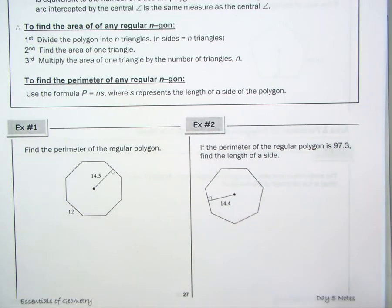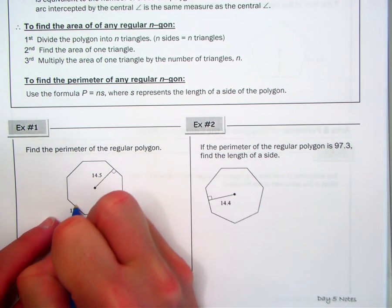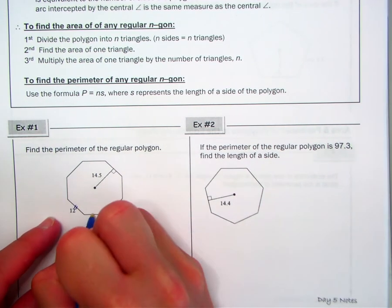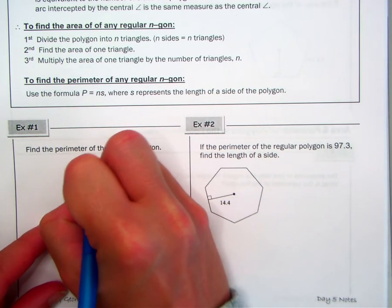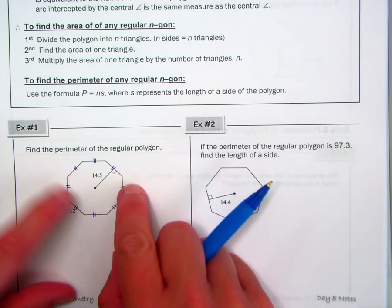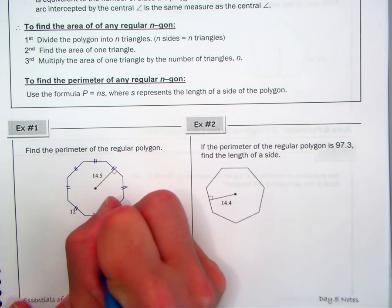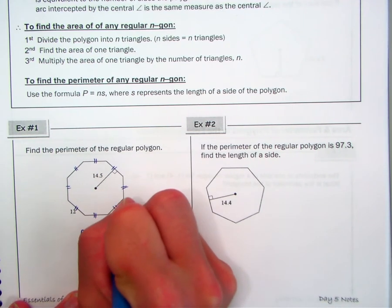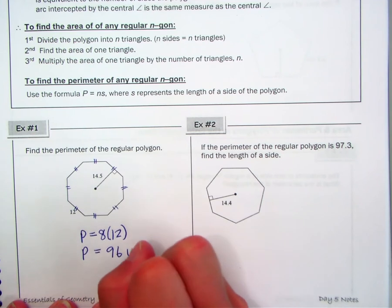So that's our first example. Find the perimeter of the regular polygon. Well, if it's regular, this one side is 12, so that means all sides are 12. How many sides do we have? Well, one, two, three, four, five, six, seven, eight. So the perimeter is going to be eight sides of length 12, which is 96 units.